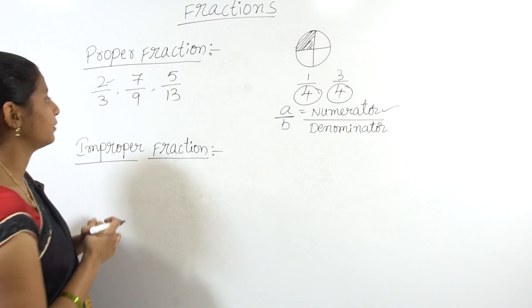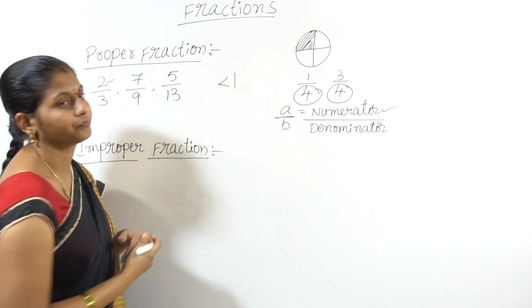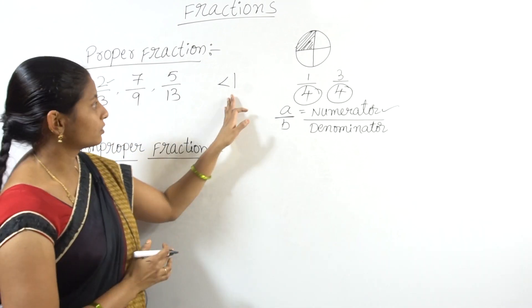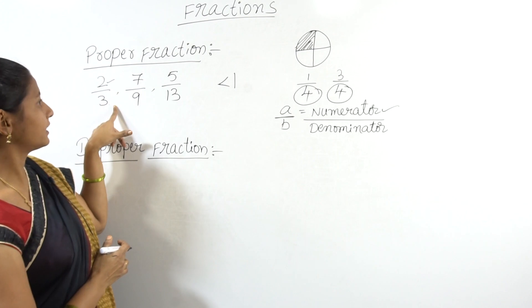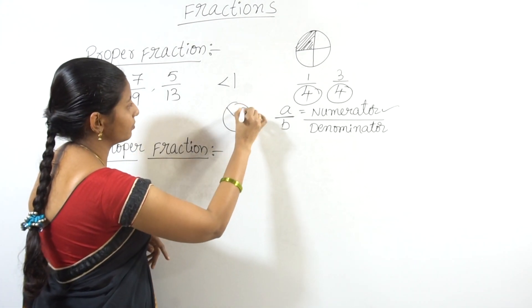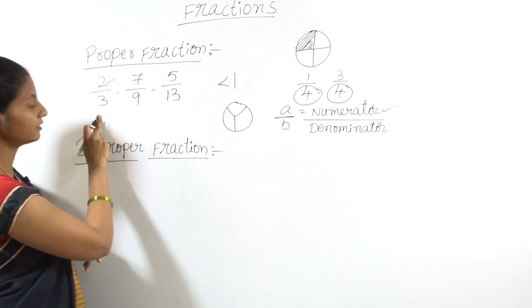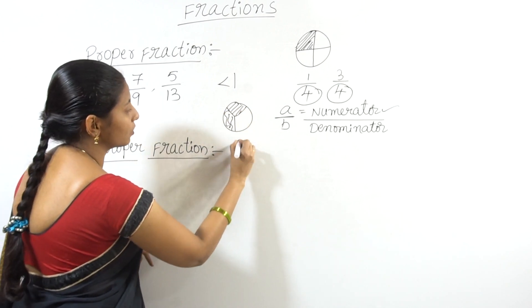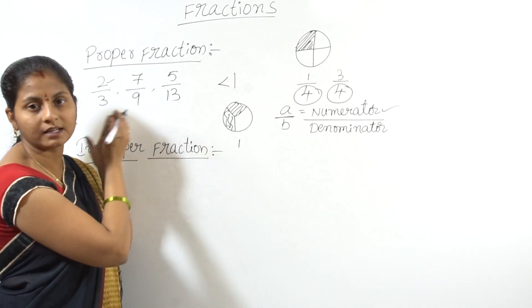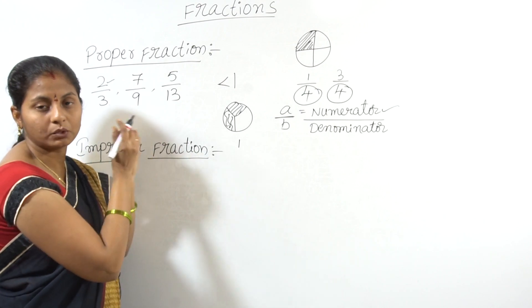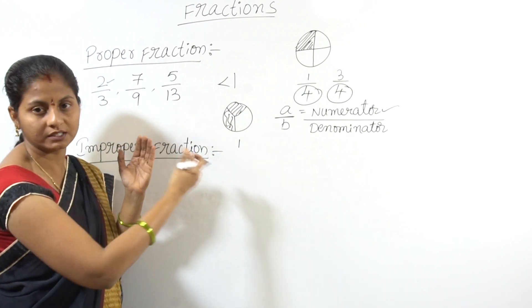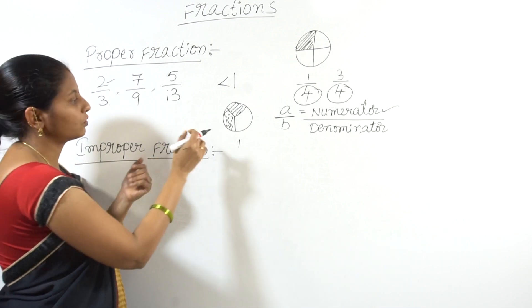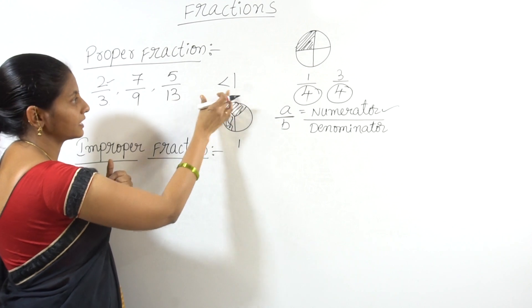The whole means one complete object. Now 2 by 3 means I have 3 equal parts as the total number of equal parts, and I have 2 parts of that whole.